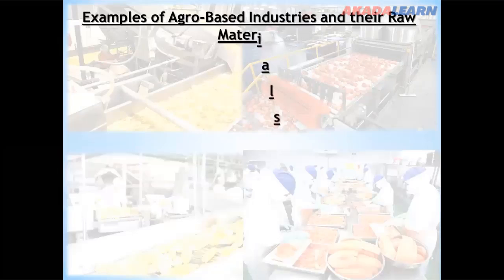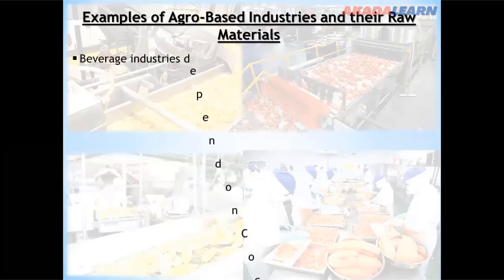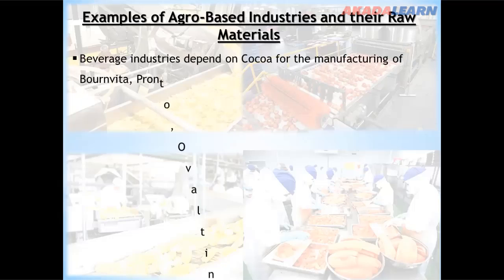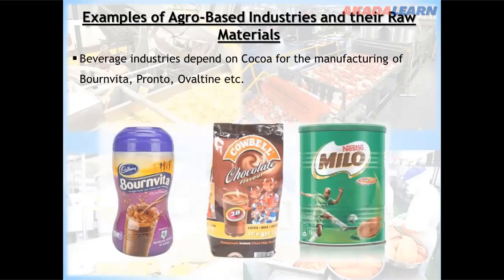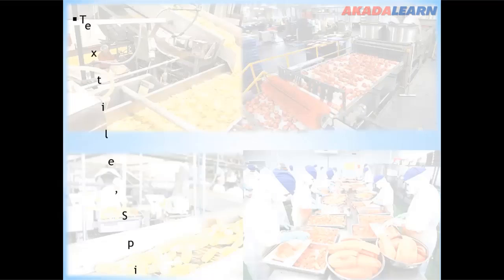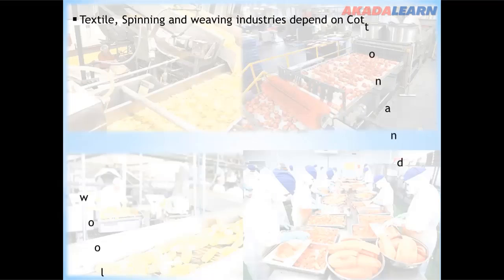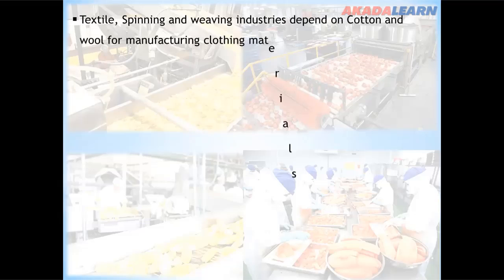Examples of agro-based industries and their raw materials: We have the beverage industries which depend on cocoa for manufacturing. We also have the textile, spinning and weaving industries which depend on cotton and wool for manufacturing clothing materials.